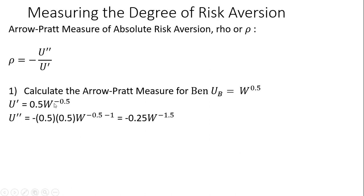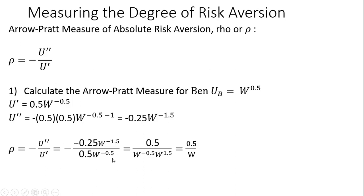Now to get the second derivative, we'll take the derivative of the first derivative. This minus 0.5 comes down in front, and that's multiplied through everything. Once again with the exponent, we subtract 1 from the exponent. Now just putting our derivative results together — the second derivative divided by the first derivative. Notice the two minuses cancel, and 0.25 divided by 0.5 leaves us with 0.5 in the numerator. Bringing w to the minus 1.5 down into the denominator gives us w raised to the 1.5. This is our measure of risk aversion for Ben.